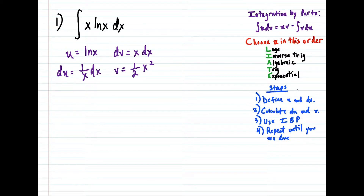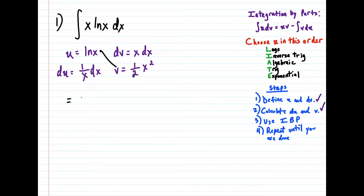Once we complete step one — this is now finished — we can apply the formula. So the integral is now equal to u times v. We're going to multiply u times v and we're going to have one half x squared times natural log x.